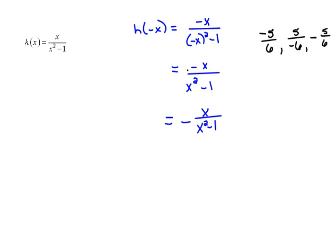So I'm going to take this negative, and instead of having it up on top, I'm going to pull it out to the front. Now, by doing that, the x over x squared minus 1 is the exact same thing we started with. So that is f of x. But we have the opposite of that.